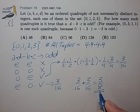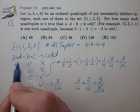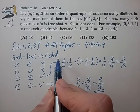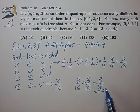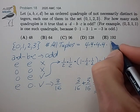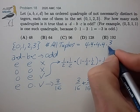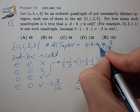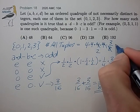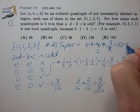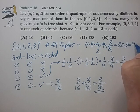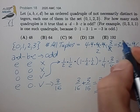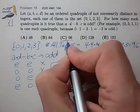So 3/8 is the probability of the expression being odd. We take this probability and multiply it by the number of all possible tuples. Getting some cancellations, that's 32 times 3, which is 96, for answer choice C.